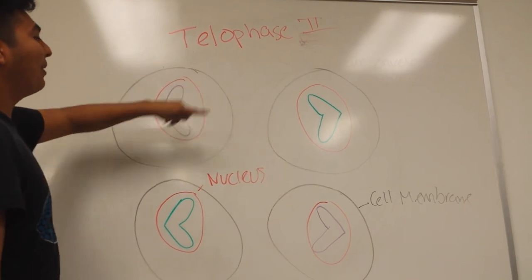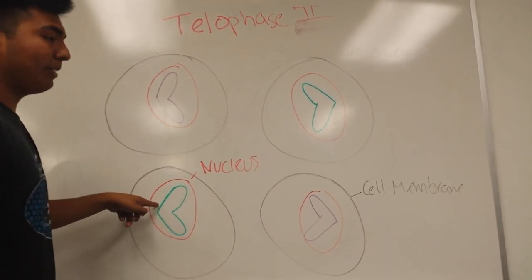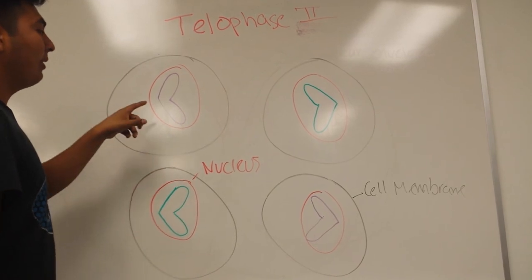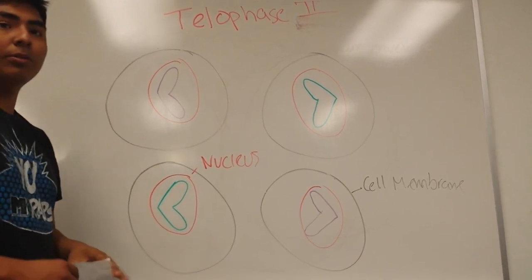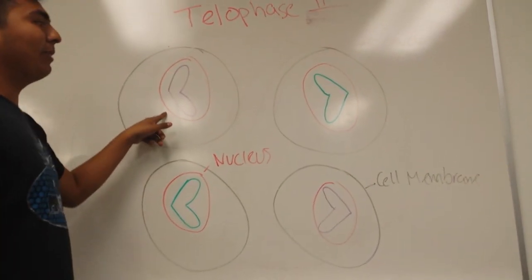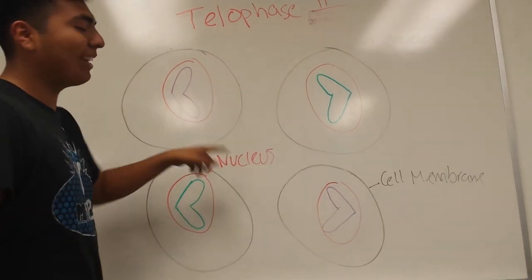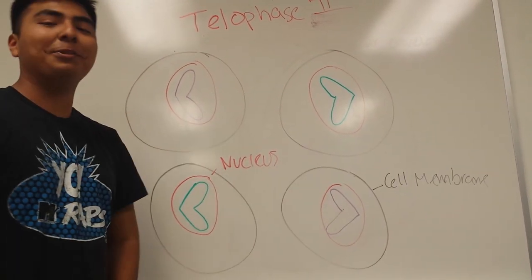During telophase 2, the nuclear membrane forms around each chromatid, which are haploids with 23 chromosomes, which is half the original diploid cell with 46 chromosomes. At the end of telophase, all of these are gametes, which is good for sexual reproduction.